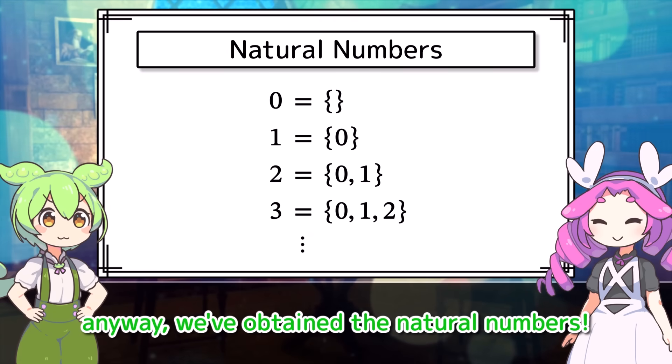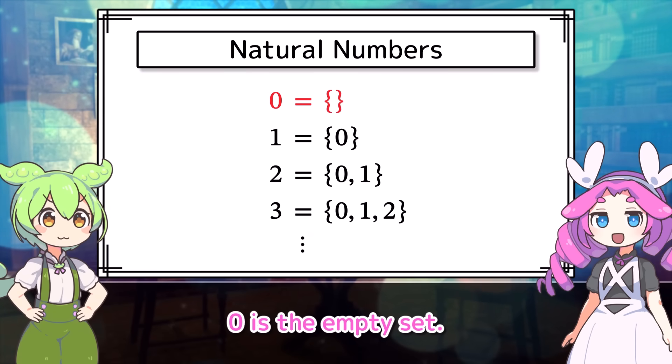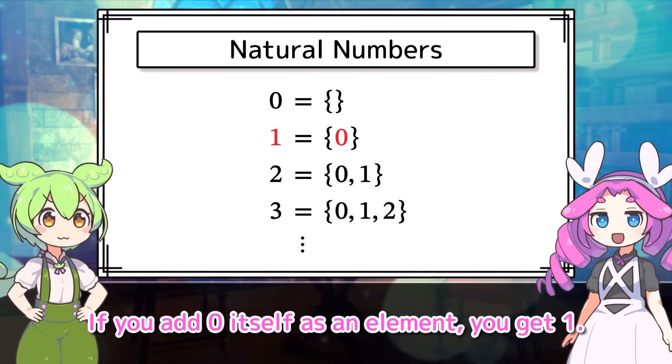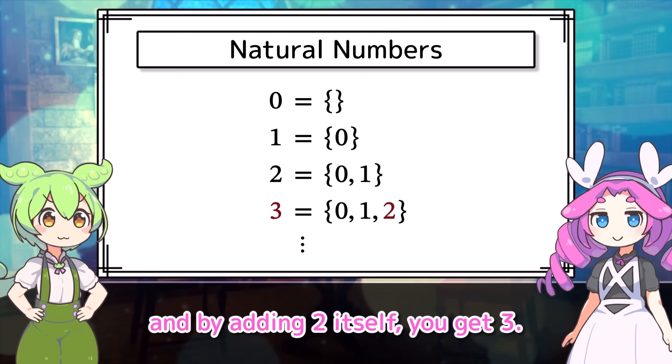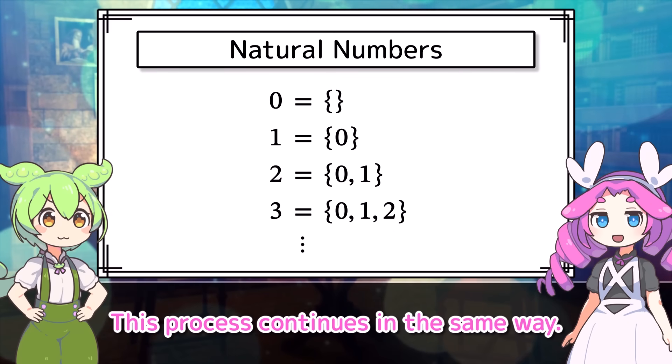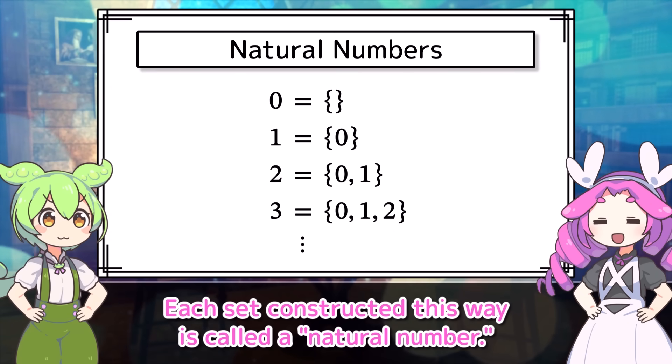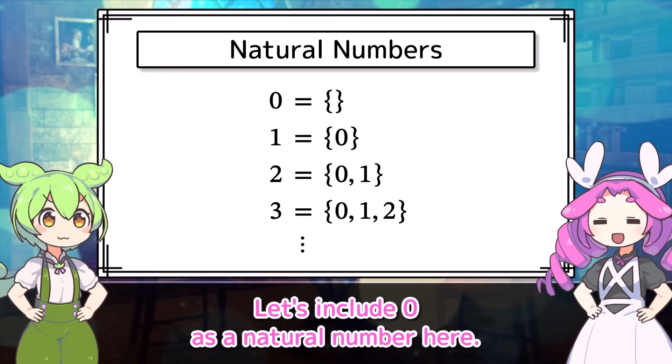Anyway, we've obtained the natural numbers. Zero is the empty set. If you add zero itself as an element, you get one. Then, by adding one itself, you get two. And by adding two itself, you get three. This process continues in the same way. Each set constructed this way is called a natural number. Let's include zero as a natural number here.